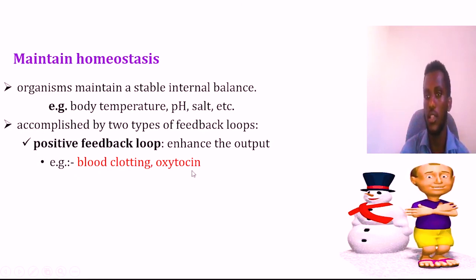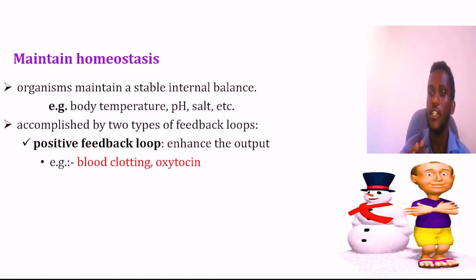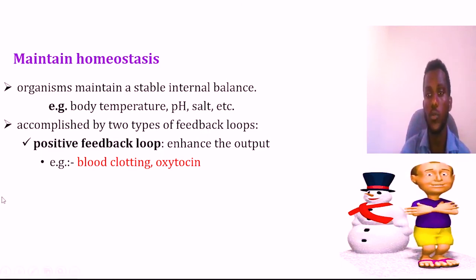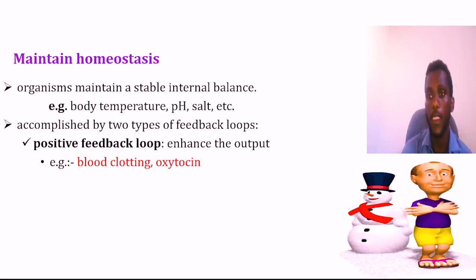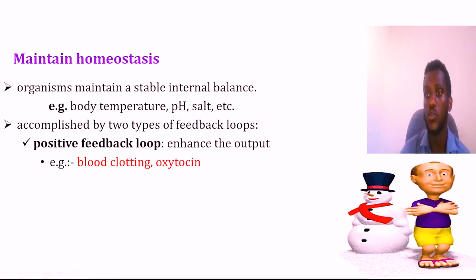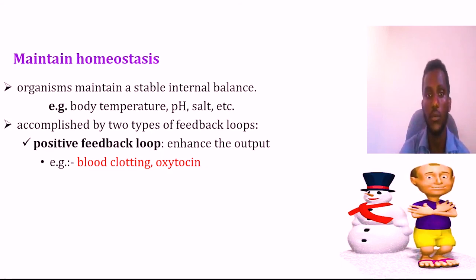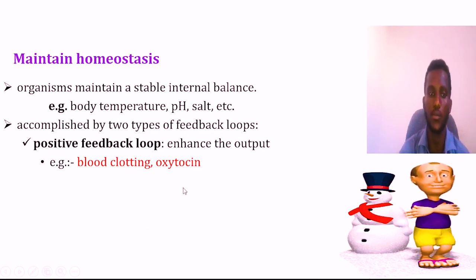Positive feedback loop: we can stimulate the body function — the normal function increases and we can enhance it. A positive reaction and response is the positive feedback loop. For example, blood clotting: there is a platelet and there is a blood clotting response — some are sent to stop bleeding and you will need blood clotting. Oxytocin is the hormone example. After birth, lactation will produce a hormone in the bloodstream. This is a positive response.